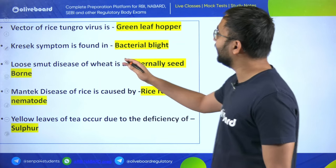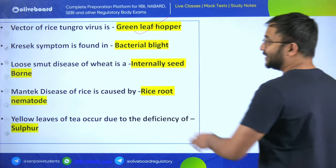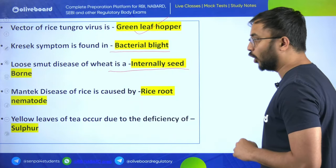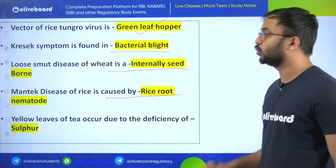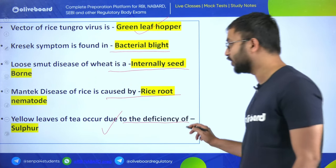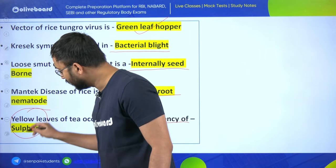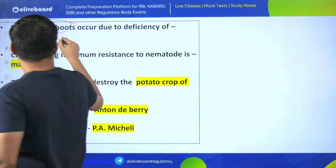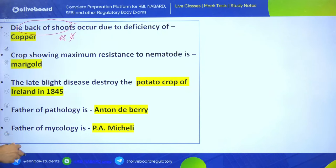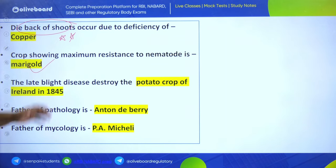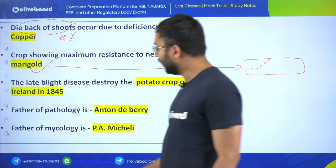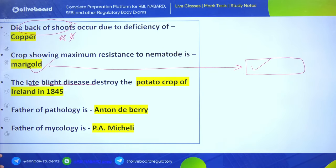In rice, the Tungro virus vector is the green leafhopper. Cresic symptom is found in bacterial blight. Karnal bunt disease of wheat is an internally seed-borne disease. Nayak disease of rice is caused by rice root nematode. Yellow leaves of tea occur due to deficiency of sulfur - very important, remember sulfur for yellow leaf in tea. Dieback of shoots is because of deficiency of copper.